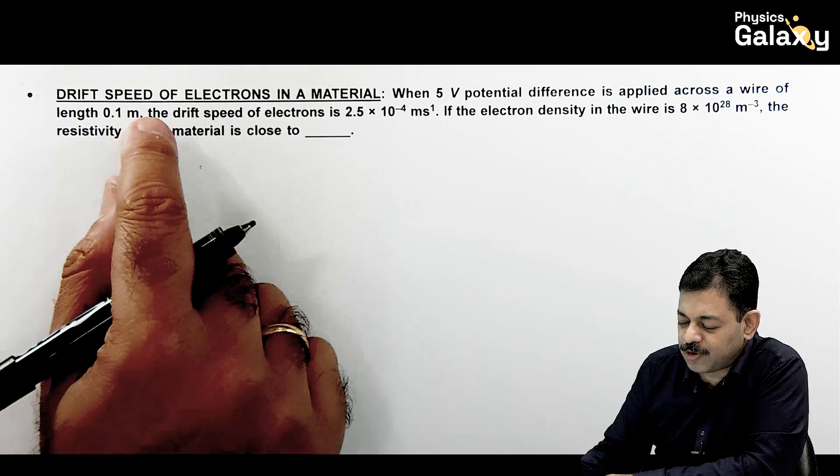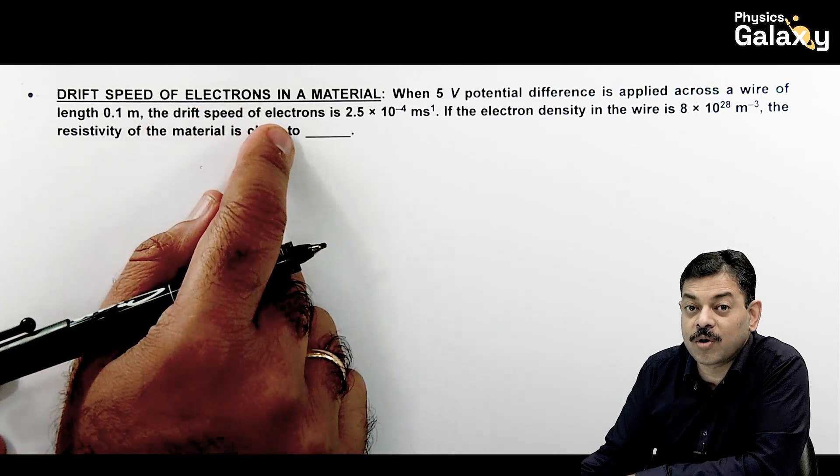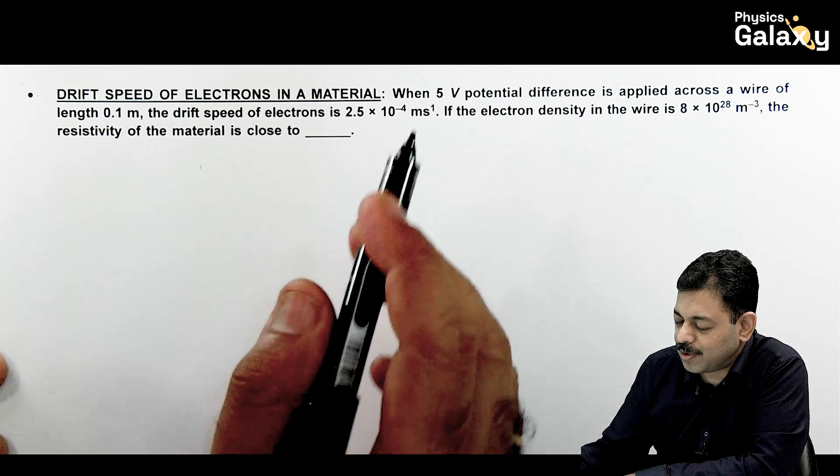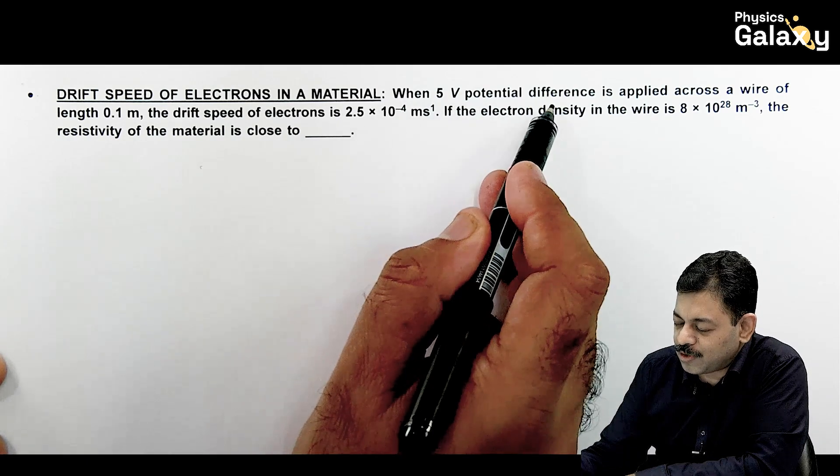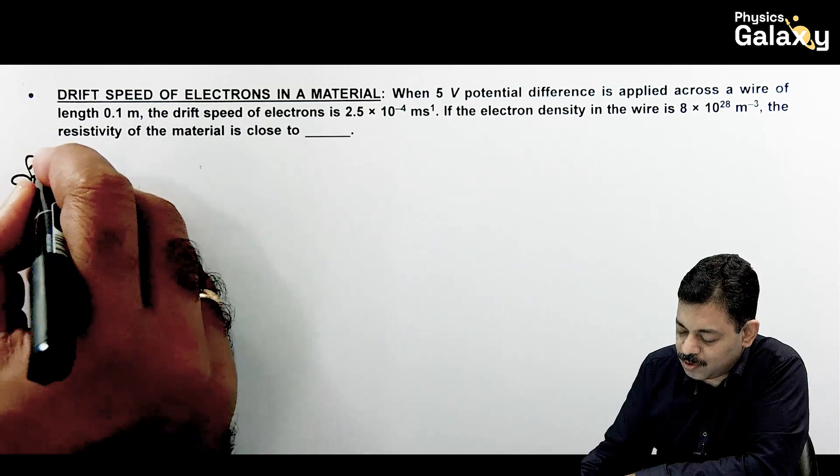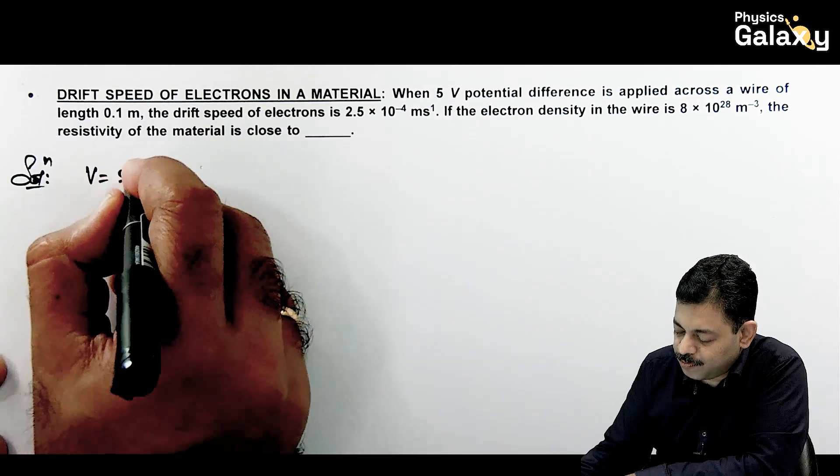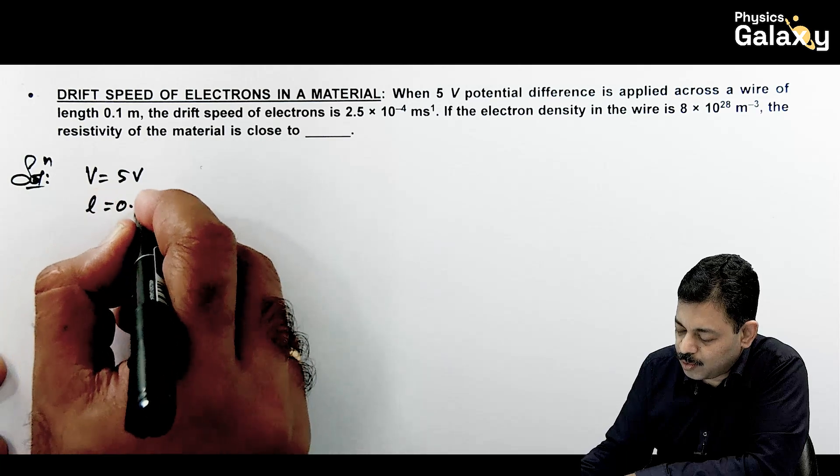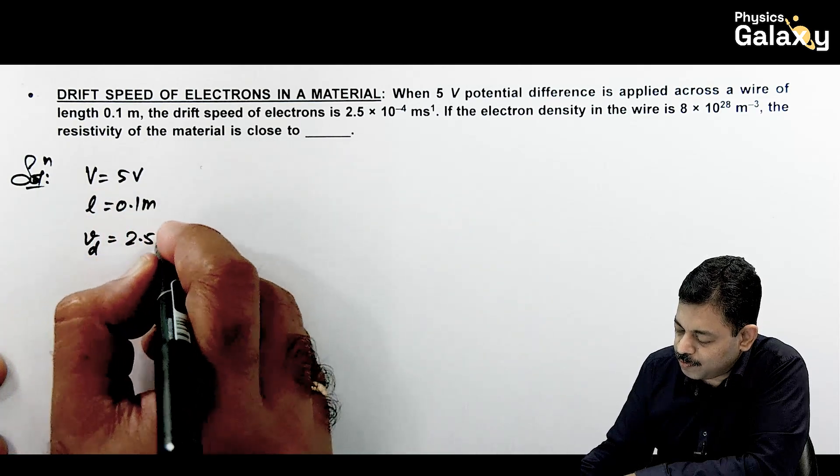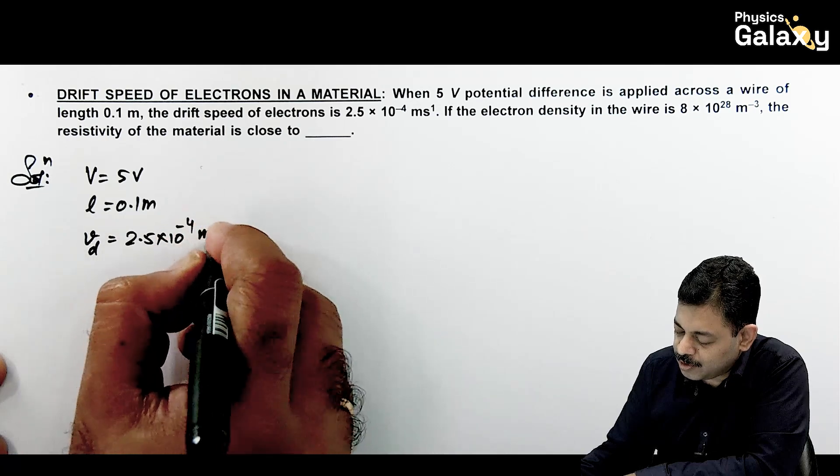Here we will be talking about drift speed of electrons in a material, but it depends on which parameters are given in the question. When 5 volt potential difference is applied across a wire of length 0.1 meter, drift speed of electrons is also given to us as 2.5 into 10 to the power minus 4 meters per second.